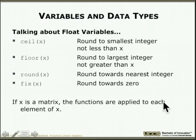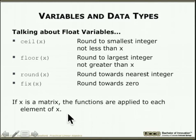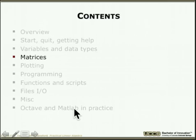For rounding, there are built-in operators: 'ceil(x)' rounds up to the smallest integer not less than x, 'floor(x)' rounds down, 'round(x)' is the most useful, and 'fix(x)' rounds toward zero. If x is a matrix, these functions are applied element-by-element. This pattern — applying an operation element-wise to a matrix — is common throughout MATLAB.